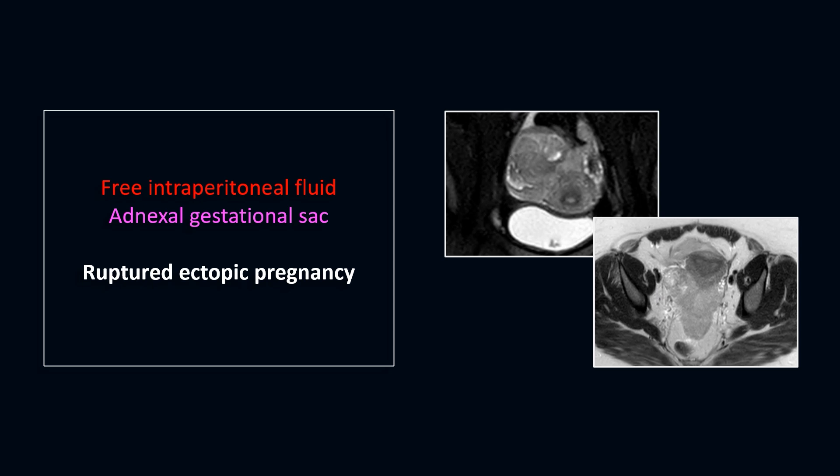This case stresses the importance of lab results while evaluating for ectopic pregnancy. The findings of complex free fluid and an absent intraperitoneal gestational sac require interpretation in conjunction with the beta-HCG level. If the beta-HCG level is greater than 2000, the findings are indicative of a ruptured ectopic pregnancy.